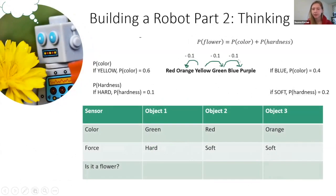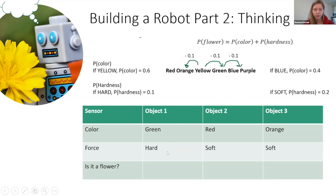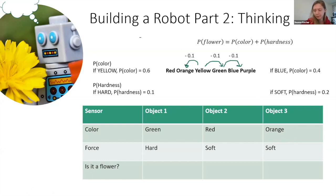Now we're going to try this on our own. We know the probability of being a flower equals color plus hardness. We have three objects — jot this down on your paper. Object one is green and hard. Object two is red and soft. Object three is orange and soft. Calculate the color probability from how far away the color is from yellow, add the hardness probability, and you get the probability of being a flower. Give it a minute and write down what you think.